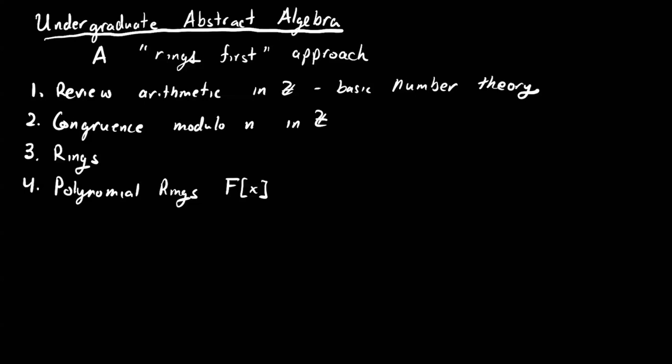So we'll get into some notions: we'll talk about ideals and quotient rings. So this is going to generalize our notion of congruence arithmetic in Z and congruence arithmetic in polynomial rings.